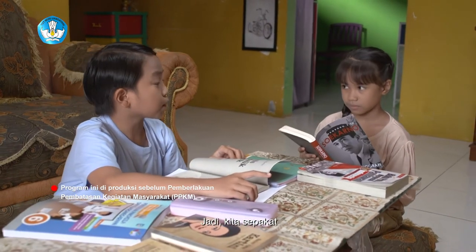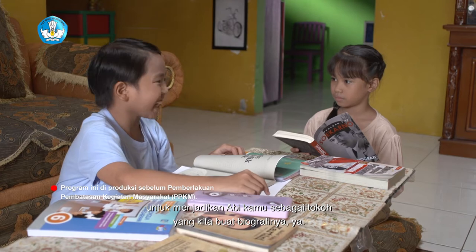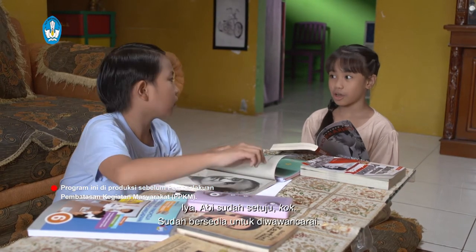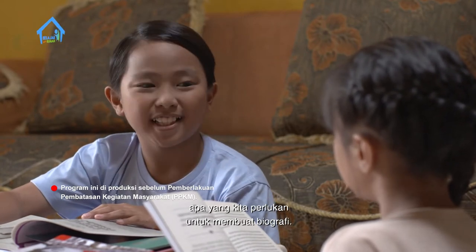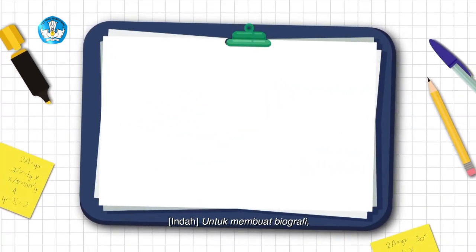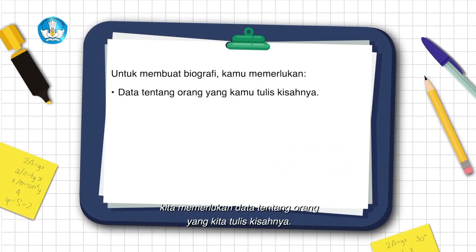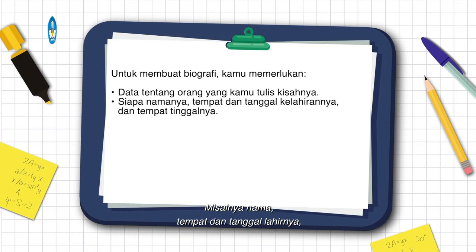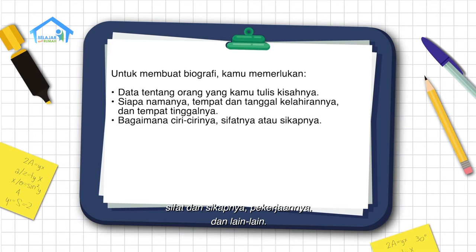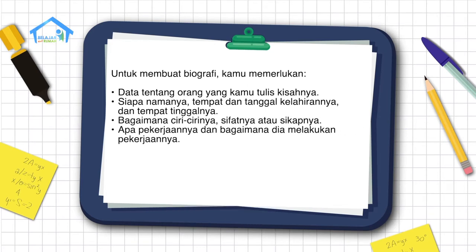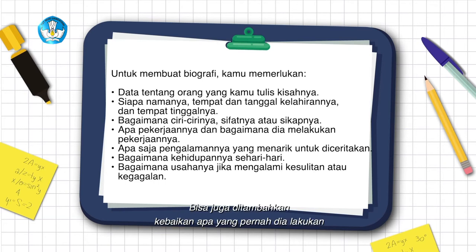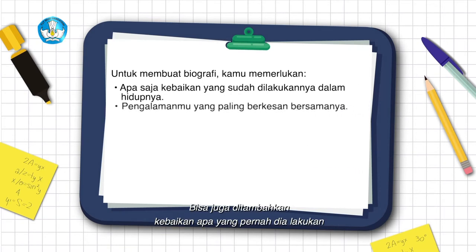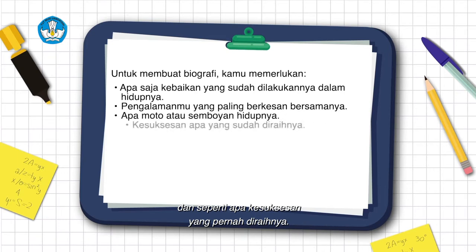Jadi kita sepakat untuk menjadikan Abi kamu sebagai tokoh yang kita buat biografinya ya? Abi sudah setuju dan bersedia untuk diwawancarai. Ayo kita siapkan dulu apa yang kita perlukan untuk membuat biografi. Untuk membuat biografi, kita memerlukan data tentang orang yang kita tulis kisahnya, misalnya nama, tempat dan tanggal lahir, sifat dan sikapnya, pekerjaannya, dan lain-lain. Kita juga perlu menanyakan pengalamannya yang menarik, kehidupan sehari-hari, kebaikan yang pernah dilakukan, dan kesuksesan yang pernah diraih.